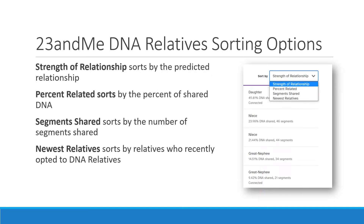At the top of your DNA relatives list at 23andMe, there is a sort-by dropdown box. The four options are: strength of relationship, which sorts by the predicted relationship; percent related, which sorts by the percent of shared DNA; segments shared, which sorts by the number of segments shared; and newest relatives, which sorts by the relatives who recently opted in to DNA relatives. The default is strength of relationship, but you can switch to percent related or the other options.